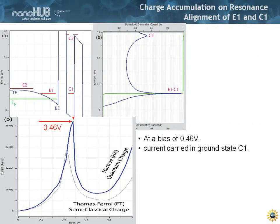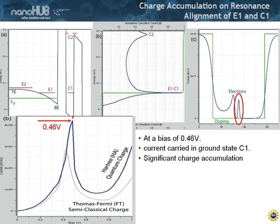Now let's look at the charge accumulation on these resonances. You've seen this current density plot already. We are at a bias of 0.46 volts, which corresponds to an alignment of C1 with E1, and so there is very strong current flow as indicated in the green line. Here we have the doping profile in green and the electron density in blue — you see the emitter bound state forming here, full of charge.